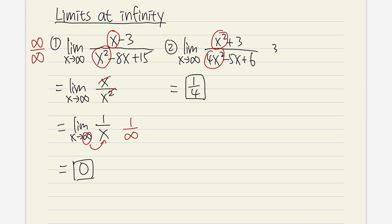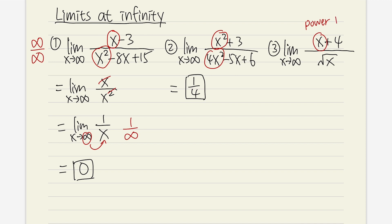Example 3: the limit as x approaching infinity of x plus 4 over the square root of x. On the top, the highest power of x is 1. On the bottom, we have a square root — and square root means a power of 1/2. The power on the top is bigger than the power on the bottom, so we get infinity. If the power on the top is bigger than the power on the bottom, we get infinity. Done deal.